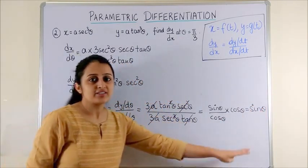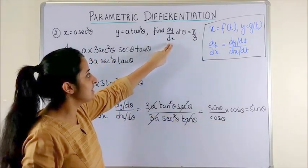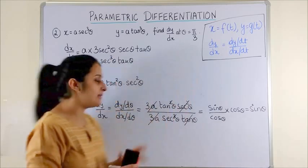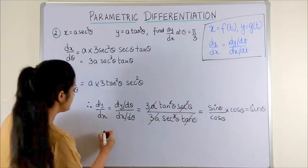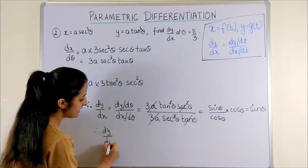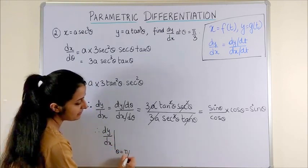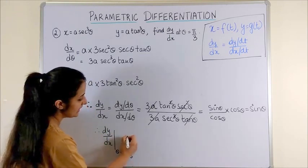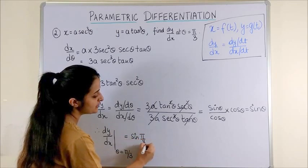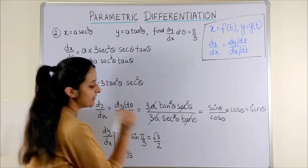Do not leave your answer there, because the question further asks to find dy/dx when θ = π/3. So we say: dy/dx at θ = π/3 is sin(π/3), which we all know is √3/2.